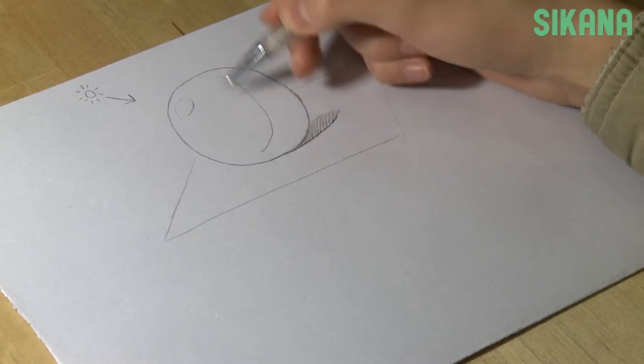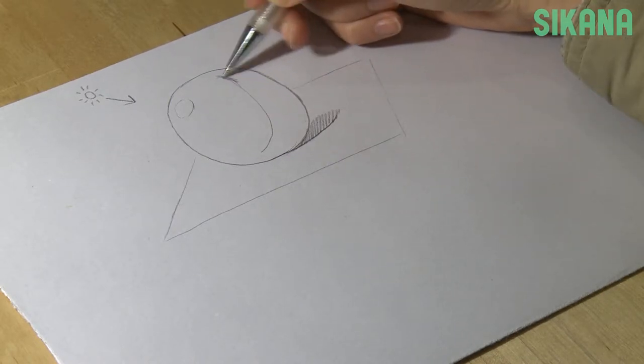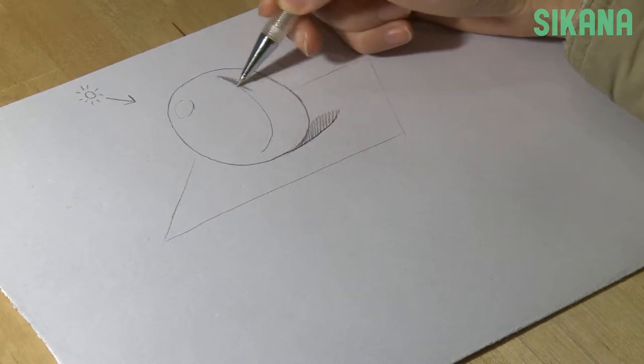Now, we're going to draw a line of separation between the light and shadow. This line marks the darkest part of the ball.